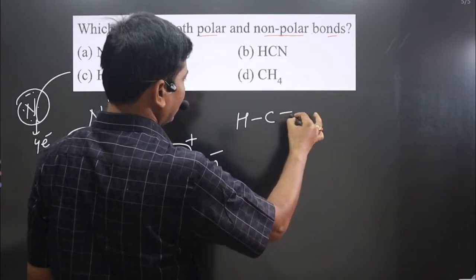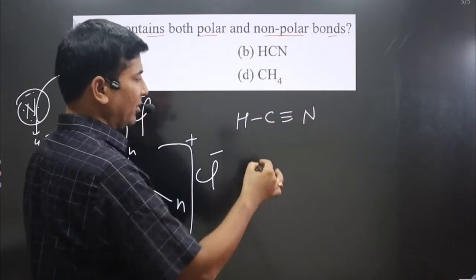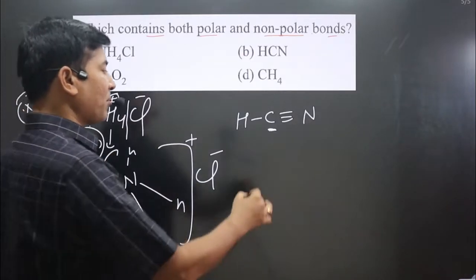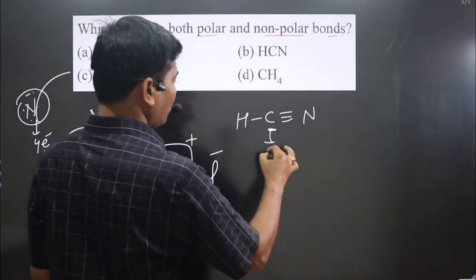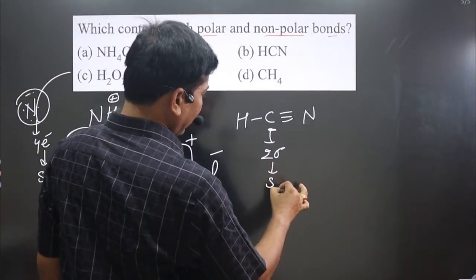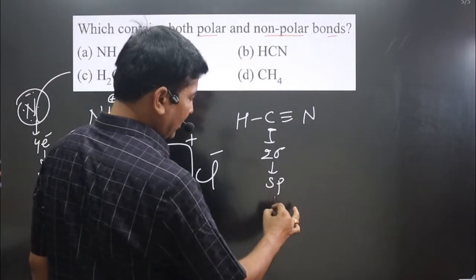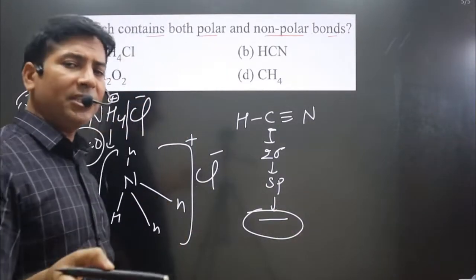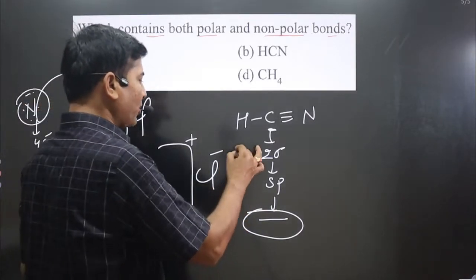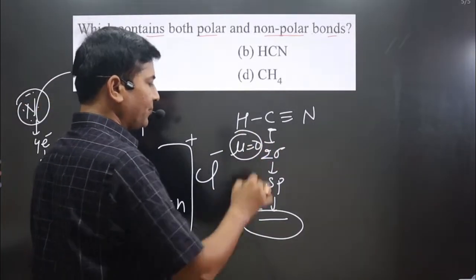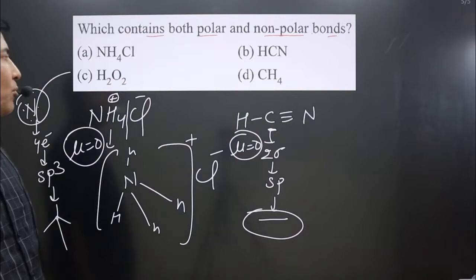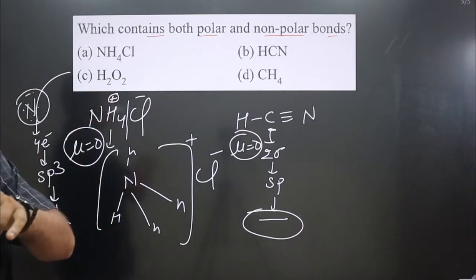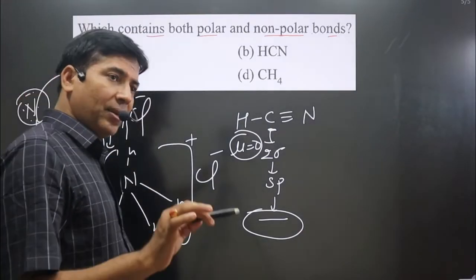Next, for CS2 (carbon disulfide), look at the central element carbon. It is forming two sigma bonds, giving sp hybridization, which means linear geometry. Linear geometry is a regular geometry, so the dipole moment will be zero — non-polar only.